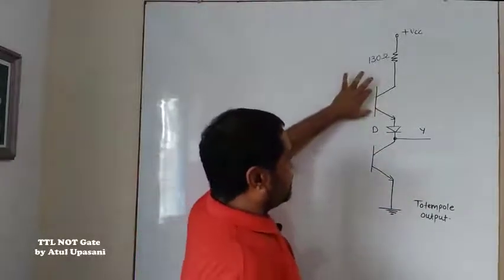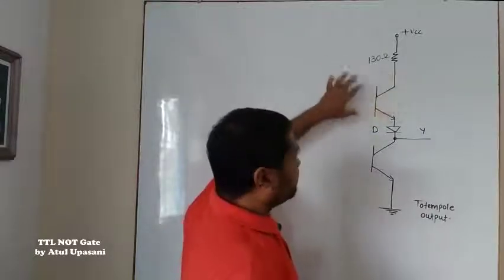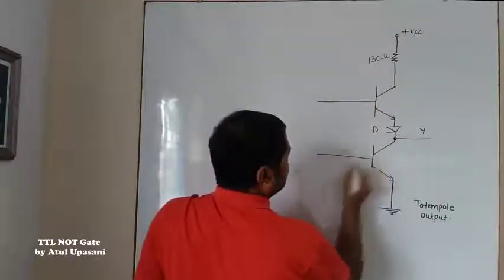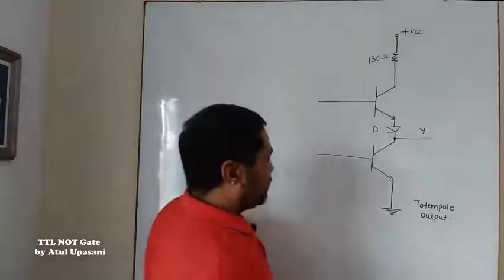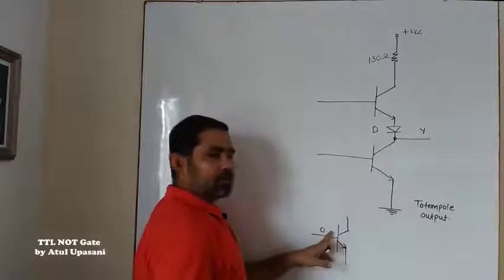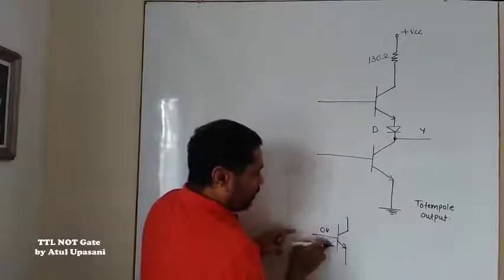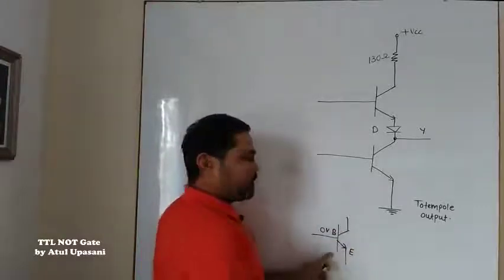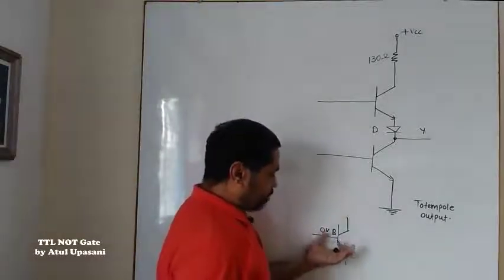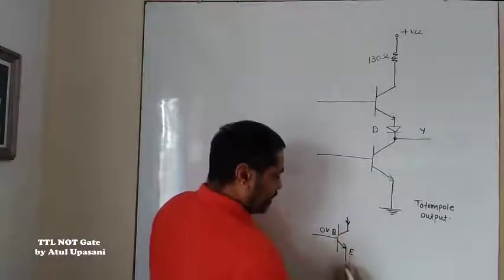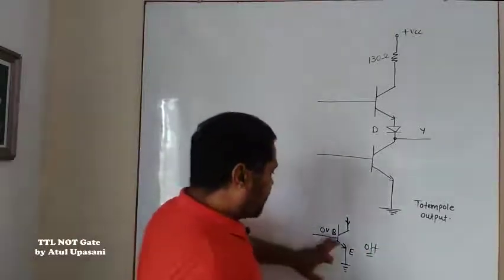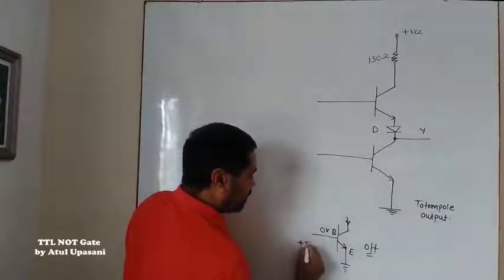Now we have to drive these transistors through the base, so the base should be connected somewhere. We know that whenever a transistor is connected in common emitter configuration, if the voltage across the base is zero volts, there will be no forward biasing at the base-emitter junction. So the base-emitter diode will be off, no collector-to-emitter current will flow, and we say the transistor is OFF.